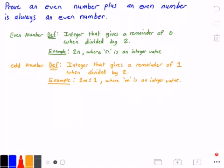We're going to take the definition of an even number like 2n and we're going to add it to another even number like 2k.